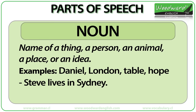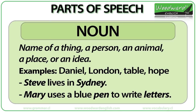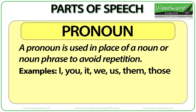Let's look at some example sentences. "Steve lives in Sydney." In this sentence there are two nouns. Steve is the name of a person, and Sydney is the name of a place, so Steve and Sydney are nouns. Next example: "Mary uses a blue pen to write letters." Mary is the name of a person, pen is the name of an object, and letters is the name of another object. Mary, pen, and letters are nouns.